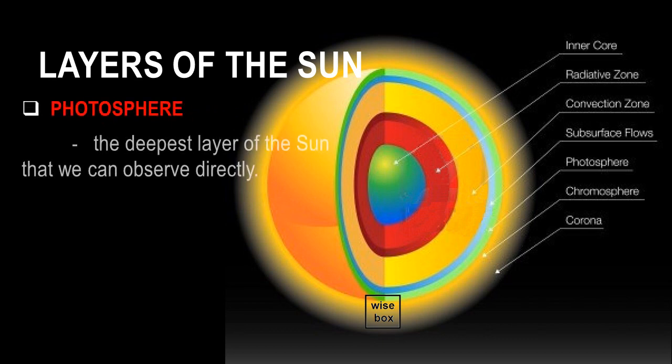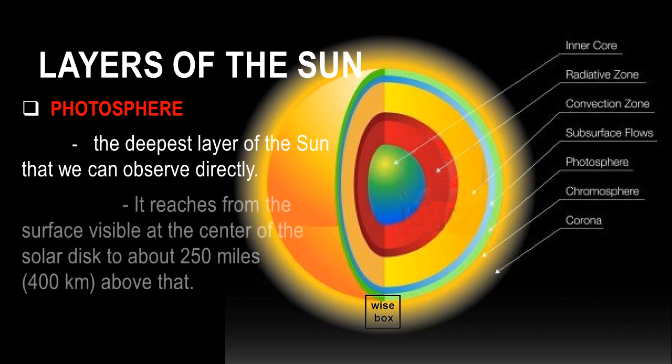The photosphere is the deepest layer of the Sun that we can observe directly. The photosphere reaches from the surface visible at the center of the solar disk to about 250 miles, or 400 kilometers, above that.